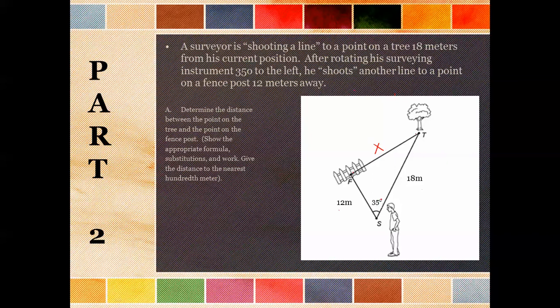If you were at the Class Connect that we did on May 15th, we talked about how to determine which one to use — the law of sines or the law of cosines — and it has to do with what information we're given. We're given a side, an angle, and then a side. If you go back and look at that formula chart I gave you, side-angle-side uses the law of cosines. The law of cosines is a² = b² + c² − 2bc·cosA.